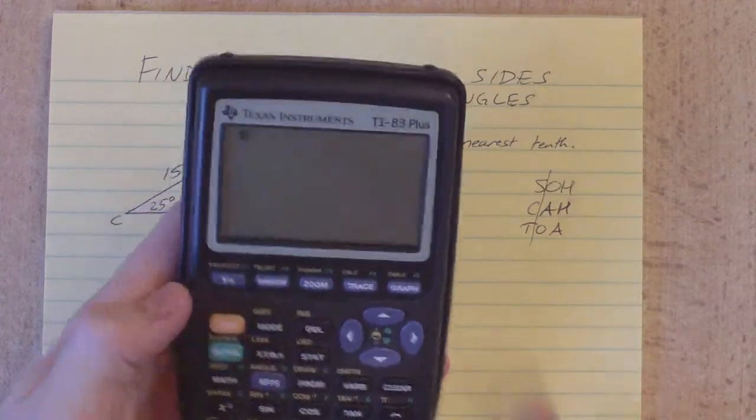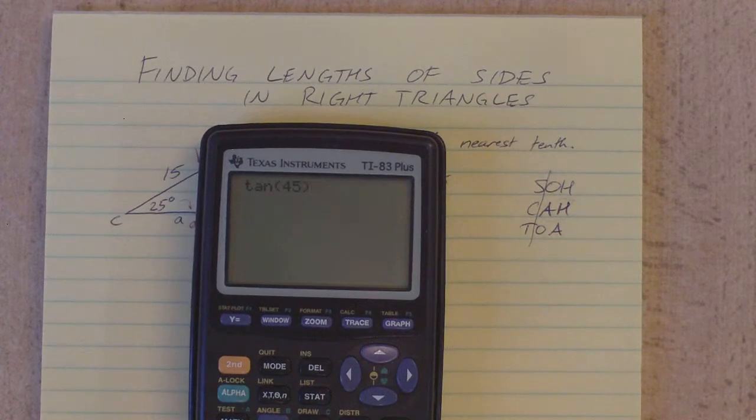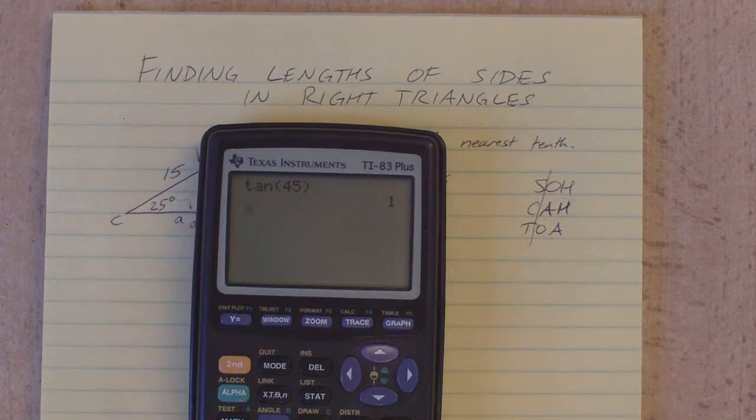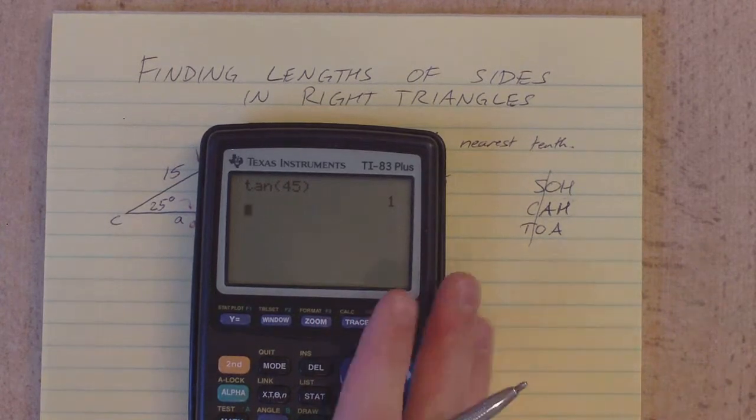A way to check, if you're not sure if you're in degree mode, type in the tangent of 45 degrees. It should give you one. If you get something else, you've got to check your mode. So we know we're in degree mode.